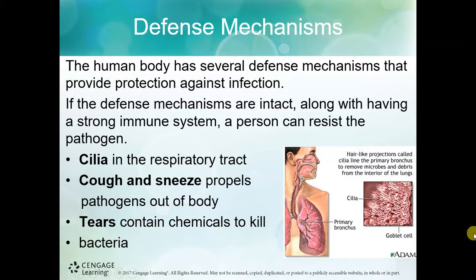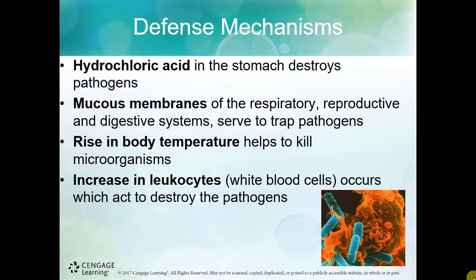Most people have defense mechanisms that prevent most infections. We have cilia in our respiratory tract; we cough and sneeze; we have tears; we have acid in our stomachs, which is important not only for digestion but also to destroy pathogens. Mucous membranes trap pathogens. The fever we get helps kill microorganisms, and increased white blood cells also act to destroy pathogens.